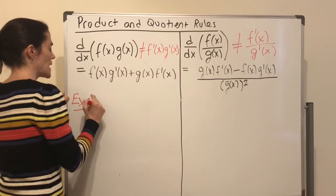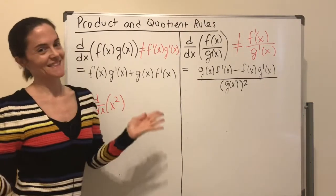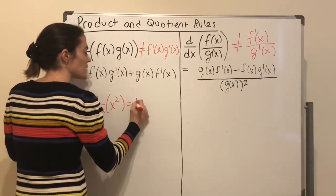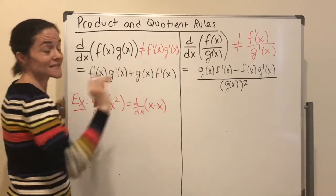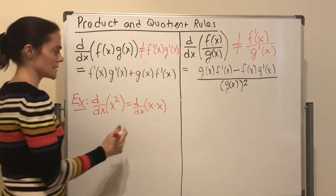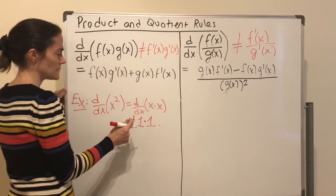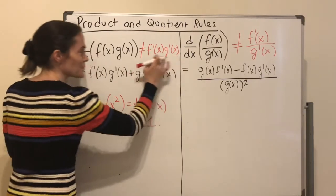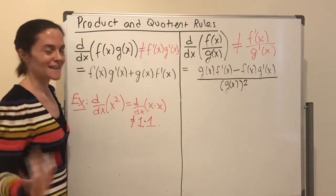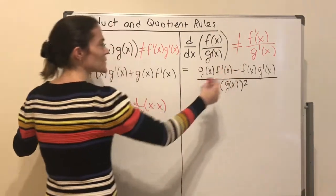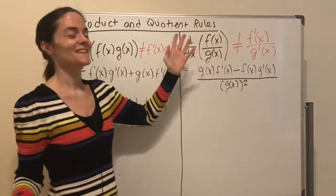For example, the derivative of x squared is 2x. We can also write x squared as x times x. The incorrect product rule would say take the derivative of the first times the derivative of the second, giving 1 times 1 equals 1. But the derivative of x squared is not 1. Similarly, x squared over x equals x, whose derivative is 1. The incorrect quotient rule gives derivative of the top over derivative of the bottom, which is definitely not correct.